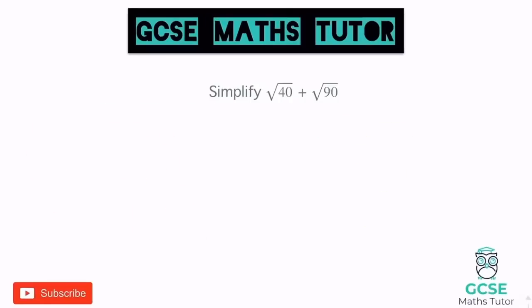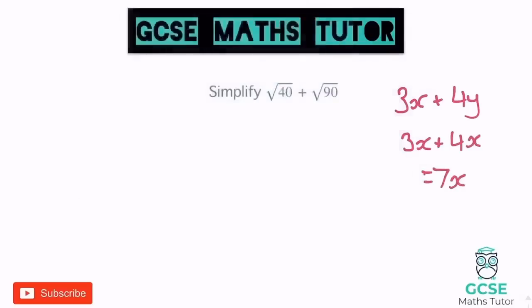We've got the square root of 40 plus the square root of 90. I like to link this back to algebra: if we have 3x + 4y, we can't add them together. But 3x + 4x can combine to make 7x, because they share the common letter x. We'll take the same approach with surds: if we can get the same number underneath the square root sign for both, we can add them together. At the moment it's 40 and 90, so they don't directly add — let's see if we can simplify.